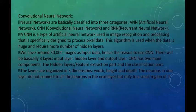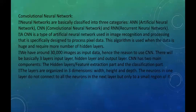Neural networks are classified into three categories: ANN (artificial neural network), CNN (convolutional neural network), and RNN (recurrent neural network). CNN is a type of ANN used for image recognition and processing, specifically designed to process pixel data. This algorithm requires more hidden layers. We have around 30,000 images as input data, hence we use CNN. CNN has three layers: input layer, hidden layer, and output layer, with two main components — feature extraction and classification. The layers are organized in three dimensions with height and depth, and neurons in one layer connect only to a small region of the next layer.